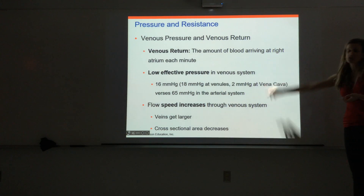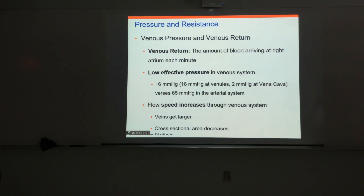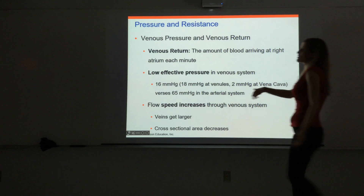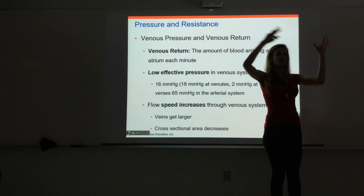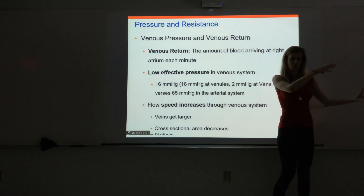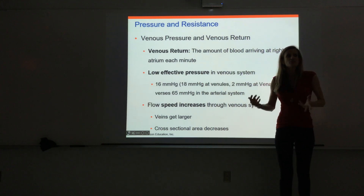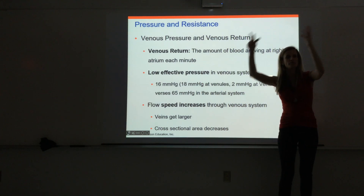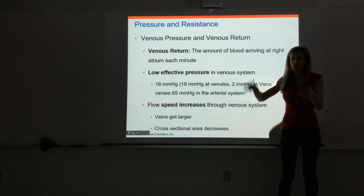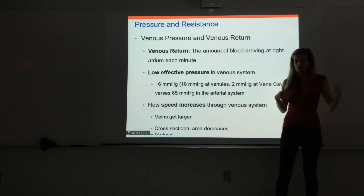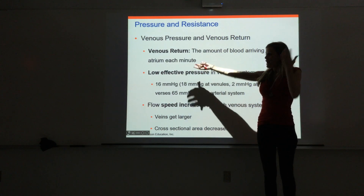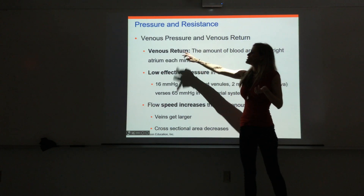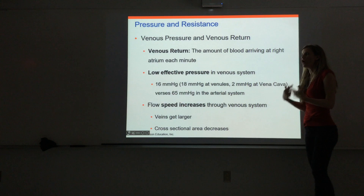Remember that venous return is the amount of blood returning to the right atrium each minute — literally the amount of blood returning to the heart via the veins. We need venous return to be pretty close to the cardiac output. Most of the blood we pump out should make its way back to the heart if we want the circuit to keep going and not run out of blood.